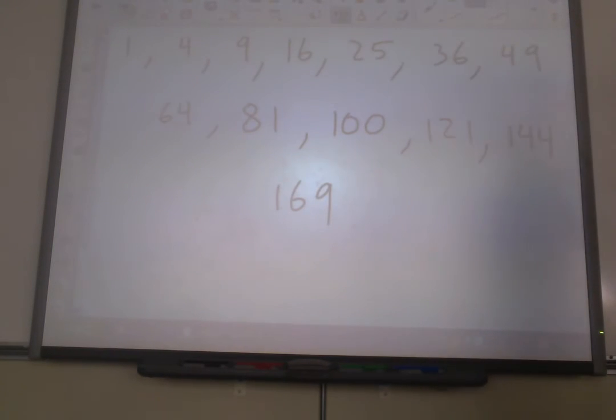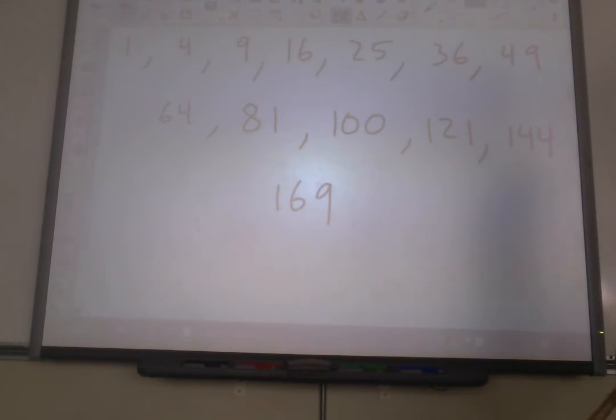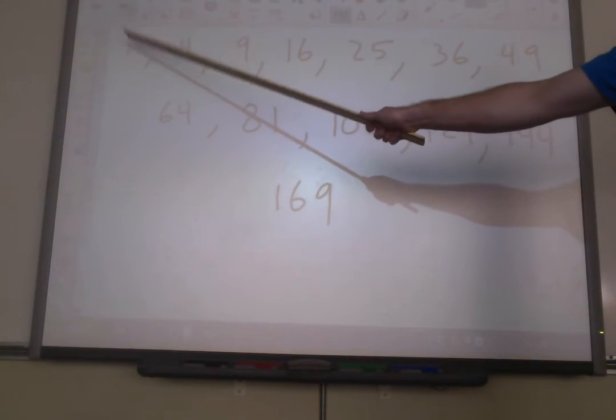Here's a list of the first 13 perfect squares. The first 13. Now, you should be able to come up with these pretty easily on your own. And let's talk about the pattern that would help you do that. So the first perfect square is 1. How do we know it's 1? Well, because 1 times 1 equals 1.